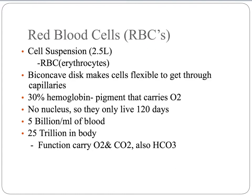Red blood cells are 30% hemoglobin, the special pigment that carries oxygen and carbon dioxide. They don't have a nucleus — partly because nuclei are big, and they have to squeeze through tiny capillaries, so we want them to be small cells. No nucleus means they get to be smaller. But without a nucleus they can't divide and reproduce, so they only live about 120 days. They accumulate damage as they travel around, getting banged against the walls of blood vessels, so after about 120 days they're worn out, tattered, torn, leaking their contents, and need to be replaced. Red blood cells also carry carbon dioxide in another form called HCO3, or bicarbonate, which we will talk about later.